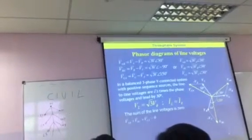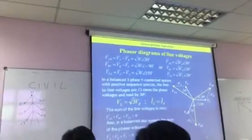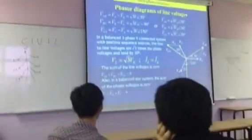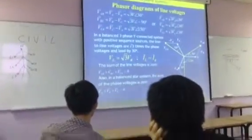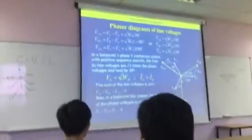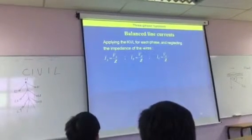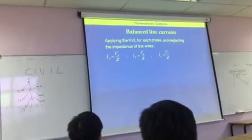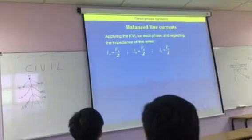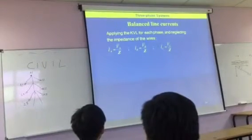And the sum of the line voltages is 0. And also the sum of the phase voltages is 0, which would be the x-phase. So just quickly to look at the line currents, those are the line voltages. If we consider the line currents.